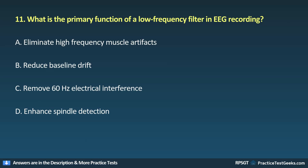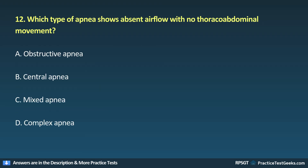Question 11: What is the primary function of a low-frequency filter in EEG recording? A. Eliminate high-frequency muscle artifacts, B. Reduce baseline drift, C. Remove 60 Hz electrical interference, D. Enhance spindle detection.